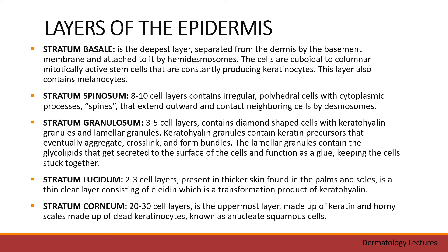Stratum corneum consists of 20 to 30 cell layers. It is the uppermost layer made up of keratin and horny scales made up of dead keratinocytes known as anucleate squamous cells.